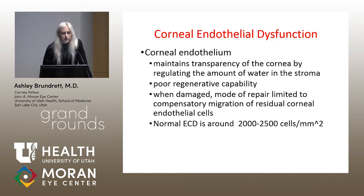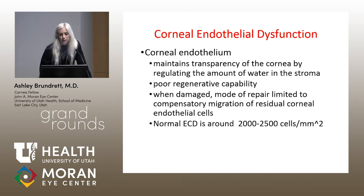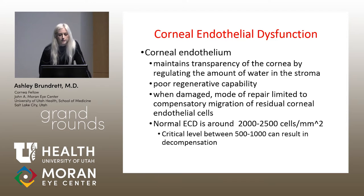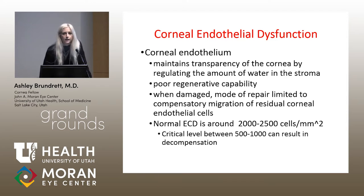Normal endothelial cell density is around 2,000 to 2,500 cells per millimeter squared. It depends on age, and typically when you reach a critical level of between 500 to 1,000, this can result in corneal decompensation, corneal edema, decreased vision, and even scarring.